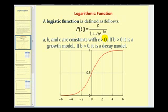A logistic function is defined as we see here, where a, b, and c are constants. And if b is greater than zero, we have a growth model. If b is less than zero, we have a decay model. So pictured here in red, we have a logistic growth model.